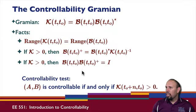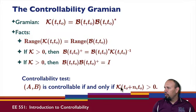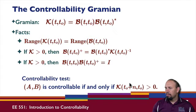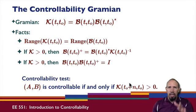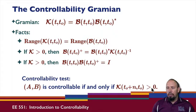This leads us to another controllability test. The system with matrices A, B is controllable if and only if the controllability Gramian up to time t0 plus n is positive definite. So rather than checking the range, which is more complicated because we have to check linear independence, I can do it this way by checking the sign definiteness of the controllability Gramian.